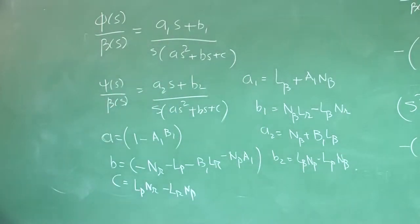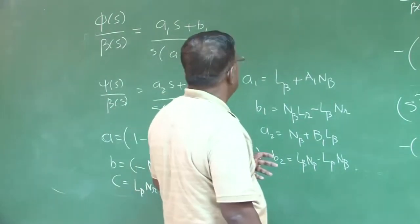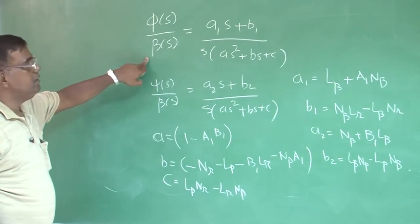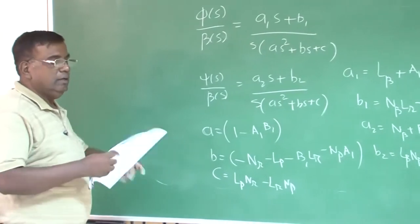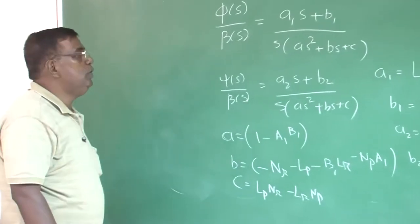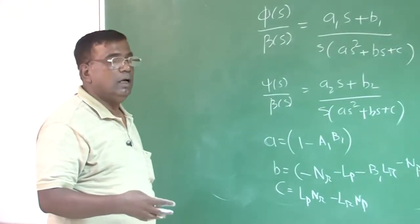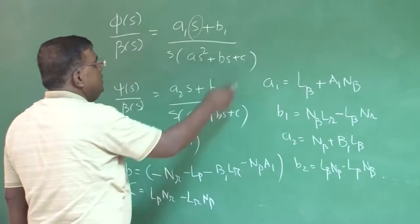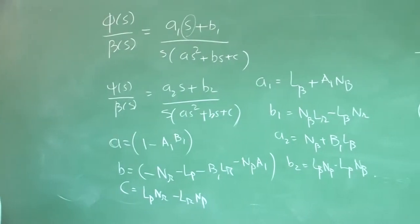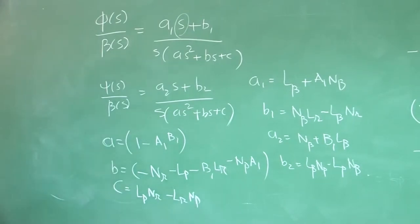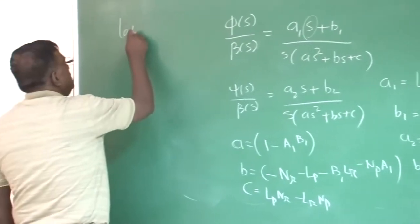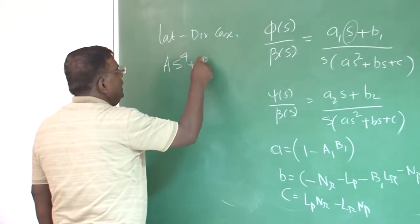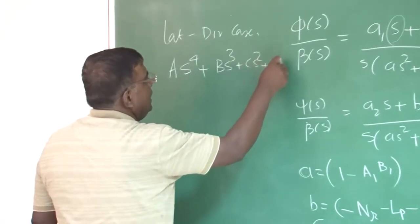So what is the message? The message is very simple: if I want to find the mode shape phi(s)/beta(s) — that is, I want to see the relative magnitude between phi and beta, whether phi is developing beta or not on that mode, the magnitude and phase difference — I need to put the value of s. All the constants a, b, etc. are known once I know the dimensional derivatives and moments of inertia. For the lateral directional case, you have again an equation of the form s^4 + b·s^3 + c·s^2 + d·s + e = 0.